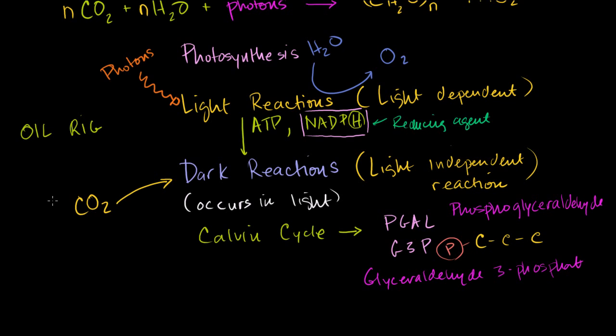That's where you get your carbons to keep producing these phosphoglyceraldehydes or glyceraldehyde 3-phosphate. So that's super important. It takes in the carbon dioxide, the products from the light reactions, and then uses that in the Calvin cycle to produce this very simple building block of other carbohydrates.